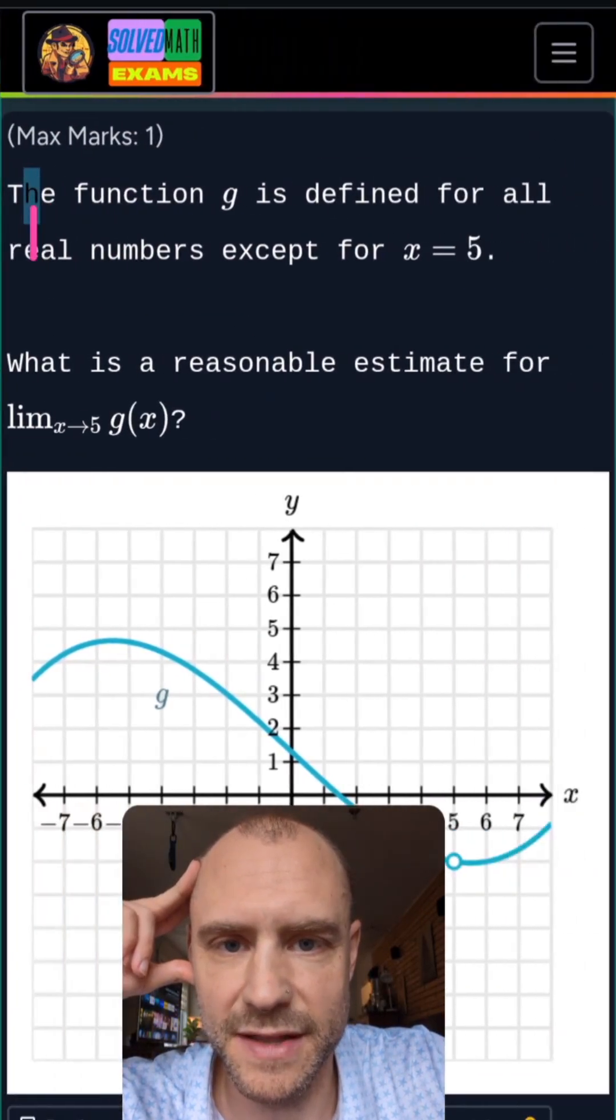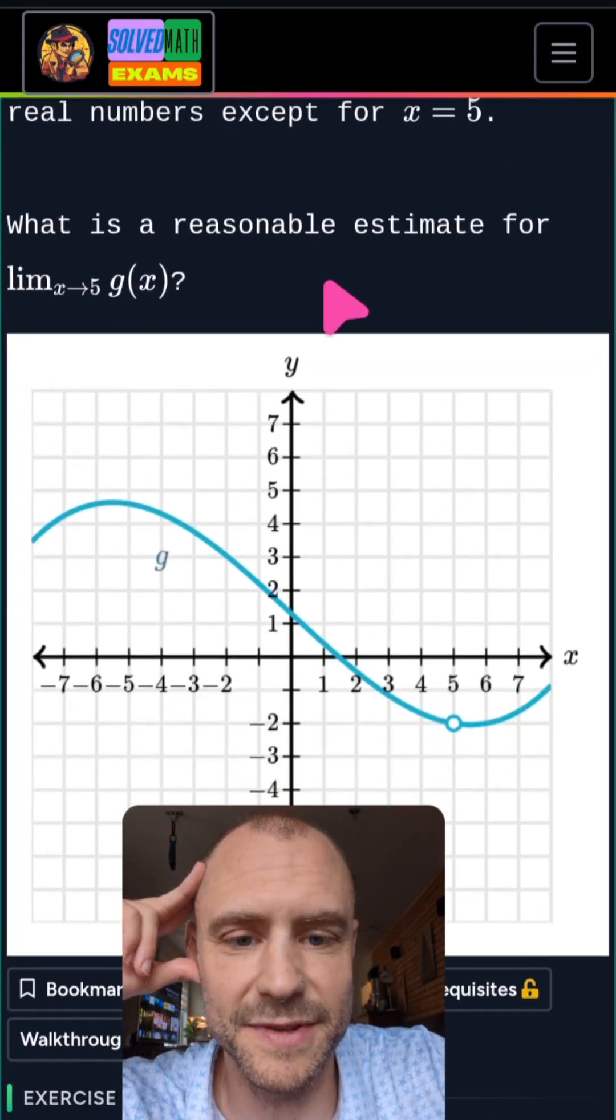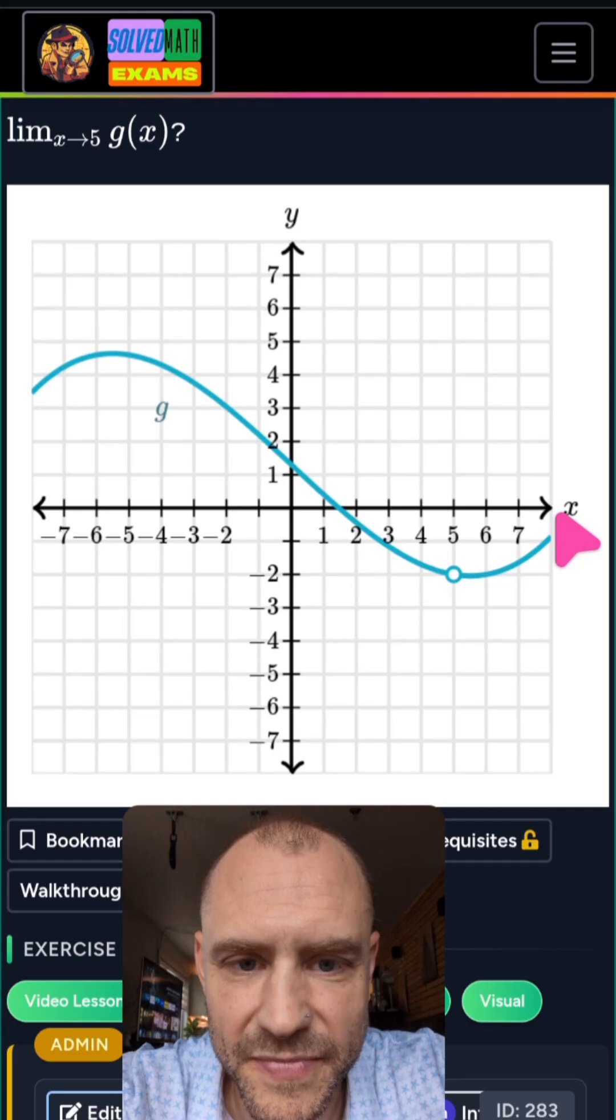So there's some more instructions at the top here. The function g is defined for all real numbers except for x is equal to 5. So we don't actually have a function value. If you put in x equals 5 into the function, there's no output at all.